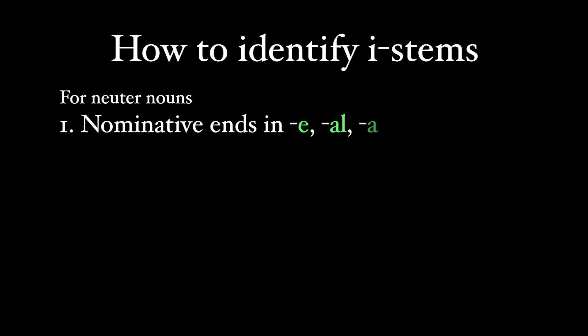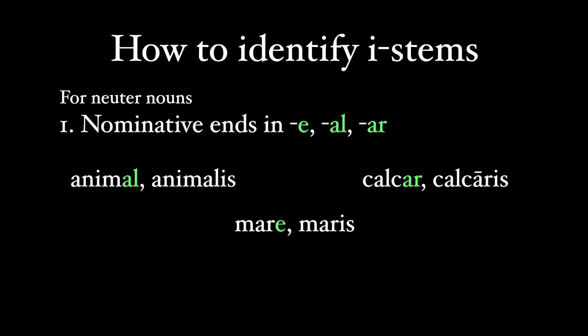Now neuters. If the word is neuter, its nominative case will end in an E, an AL, or an AR. So animal, mare, calcar. These are all I-stems.